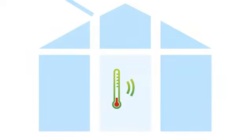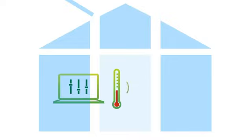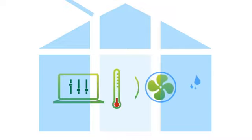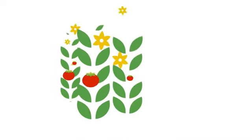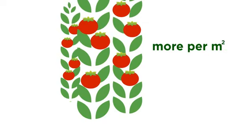Plus the grower can regulate the climate in the greenhouse just the way he wants. Inside the greenhouse, the climate and the irrigation are accurately measured and adjusted where necessary, so that plants always have the perfect conditions to grow in and so that no energy is wasted. The grower can also steer how the plants grow, so that they produce more fruits per square meter.